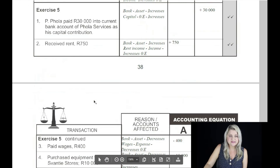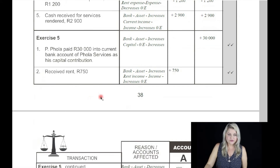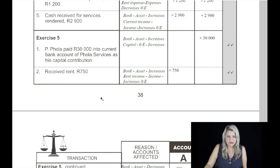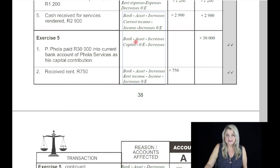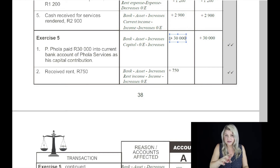Turn with me now to exercise number five on page 38. On the first transaction: P. Paula paid 30,000 Rand into the current bank account of P. Paula Services as his capital contribution. The two accounts affected are capital and bank. Bank is an asset which increases, and capital, which is an owner's equity account, also increases. The bank increases because the money is being paid into the bank account — 30,000 Rand — and capital increases owner's equity.